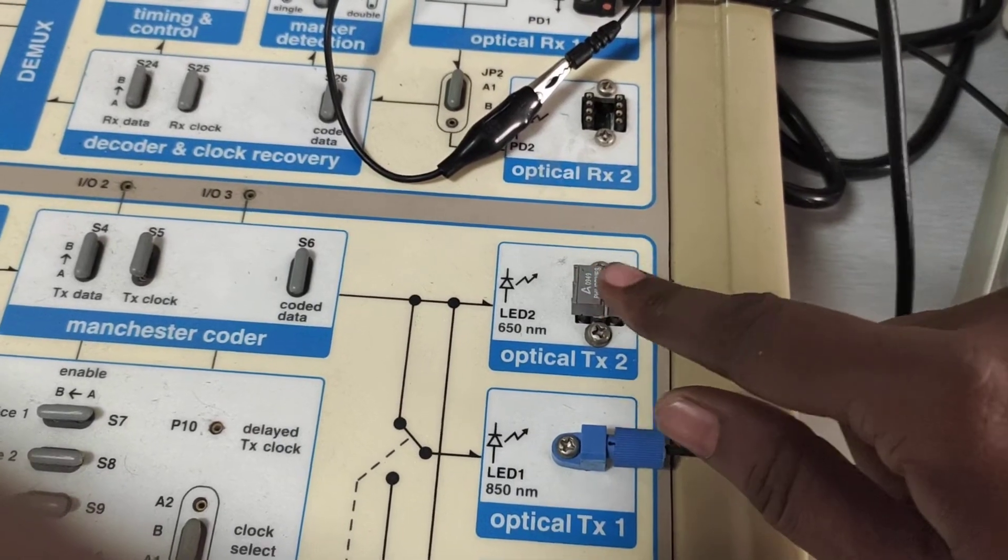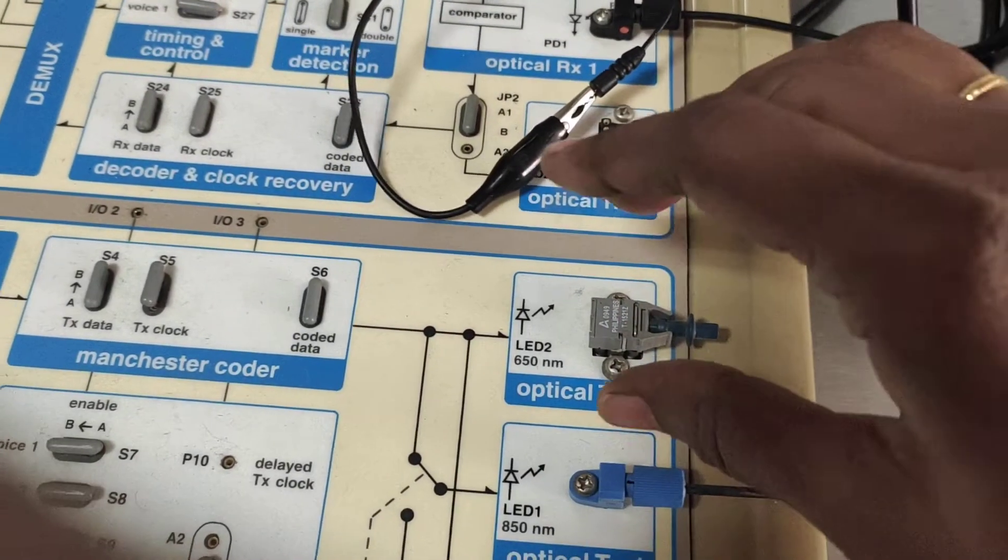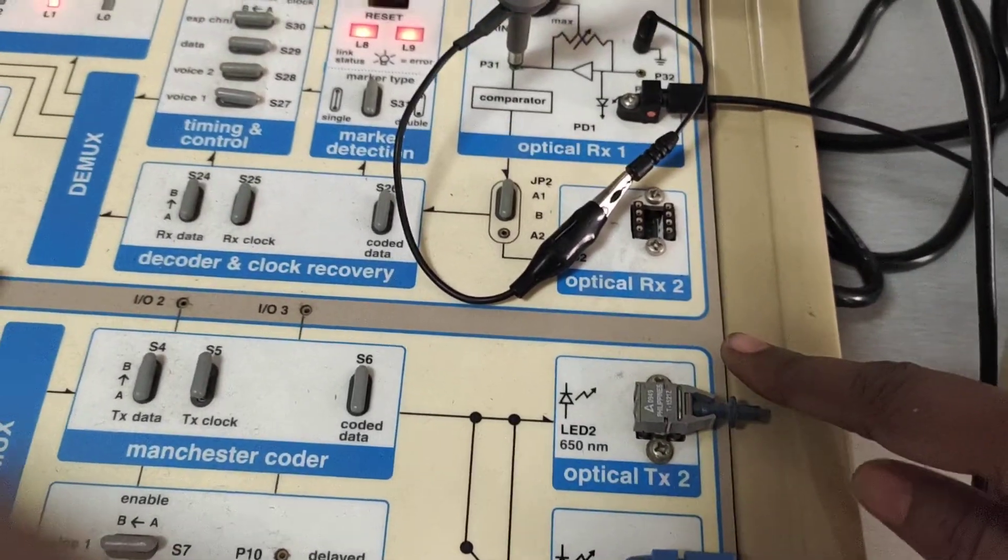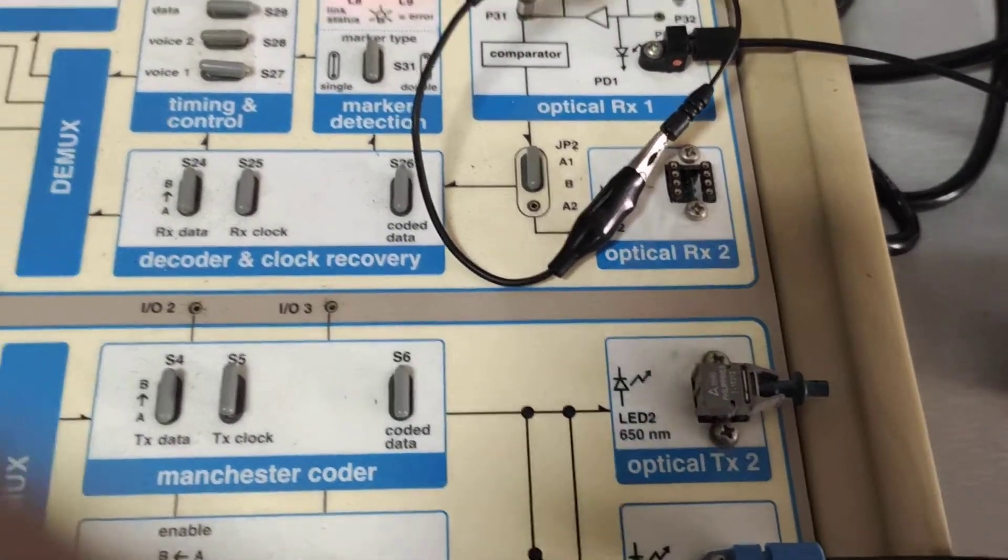Particularly for Numerical Aperture Experiment, we will use this Optical Transmitter 2 with 650 nanometer wavelength.